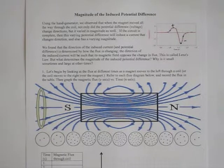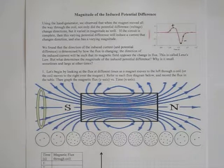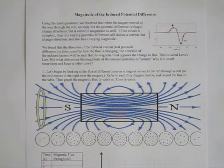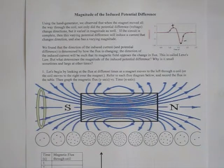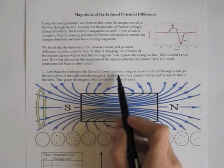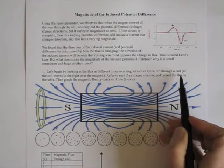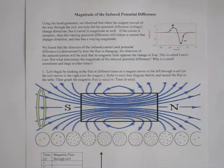We found that the direction of the induced current and potential difference is determined by how the flux is changing. The direction of the induced current will be such that its magnetic field opposes the change in flux — this is called Lenz's Law. But what determines the magnitude of the induced potential difference? Why is it small sometimes and large at other times? Let's begin by looking at the flux at different times as the magnet moves through the coil.